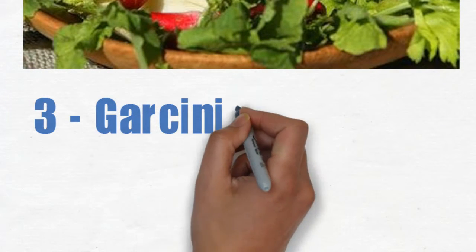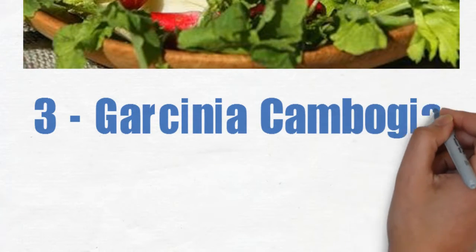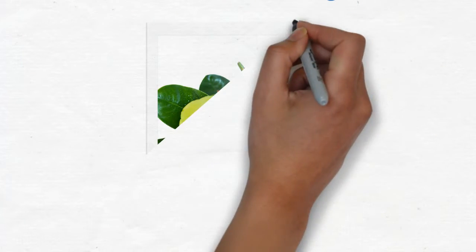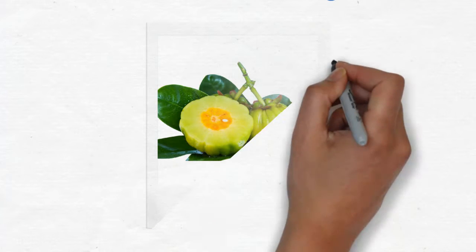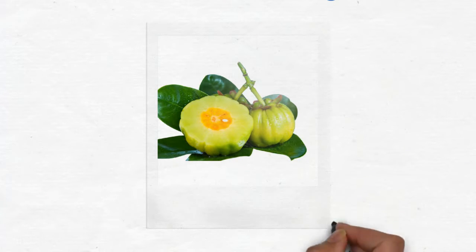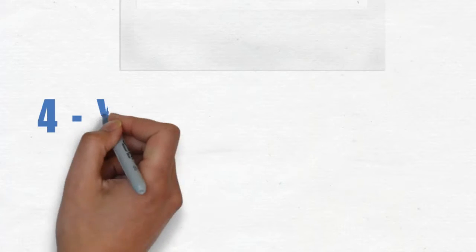3. Garcinia cambogia. This is a tropical fruit similar to a mandarin. It grows in Indonesia and has been shown to increase metabolism and reduce body weight. It can be taken as a supplement and will give you a quick pick-me-up when you need it most.